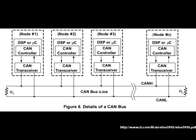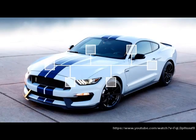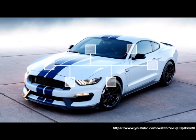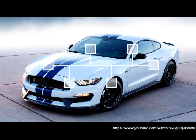Modules in the CAN system are classified as nodes and have a certain address. When each node communicates with another, it identifies itself by sending the code of that node, so each module or node will know each other.